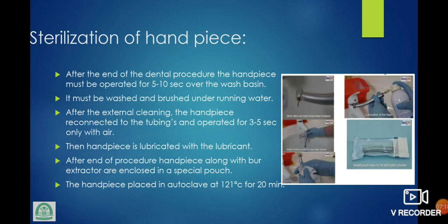Sterilization of handpiece: after the end of the dental procedure, handpiece must be operated for 5 to 10 seconds. It must be washed and brushed under running water. After external cleaning, handpiece is reconnected to the tubing and operated for 3 to 5 seconds with air only. Handpiece is lubricated with lubricant. After the end of the procedure, handpiece along with bur extractor are enclosed in a special pouch and placed in autoclave at 121 degrees Celsius for 20 minutes.